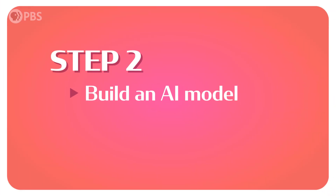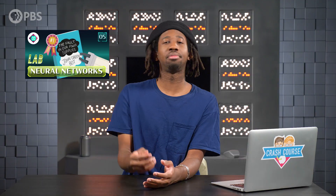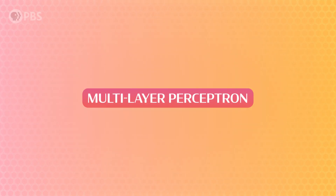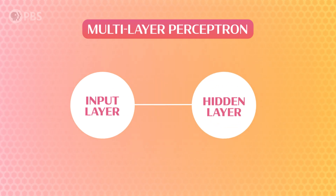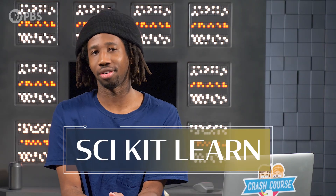Step 2. Now that I have a dataset, I need to build a neural network to help make predictions. If you did episode 5's Neural Network Lab where I digitized John Greenbot's handwriting, this step would sound familiar because I'm using the same tools. I'm going to use a Multi-Layer Perceptron Neural Network, or MLP. This neural network has an input layer for features, some number of hidden layers to learn representations, and a final output layer to make a prediction. The hidden layers find relationships between the features that help it make accurate predictions.